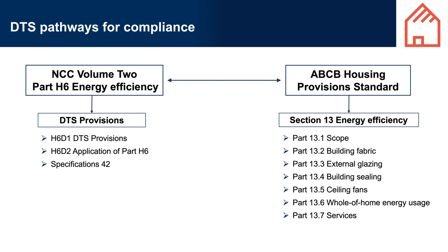Under Part H6, Pathway 1 is to use the House Energy Rating Software (NatHERS), applying Specification 42, to achieve the heating and cooling loads, net equivalent energy usage, and other energy-saving features such as thermal breaks, compensation for loss of ceiling insulation, floor edge insulation, and building sealing. Pathway 2 is to apply the elemental provisions using Section 13 of the ABCB Housing Provisions Standard. These provisions deal with different elements of the building including building fabric, external envelope, external glazing, building sealing, ceiling fans, whole-of-home energy usage, and services.